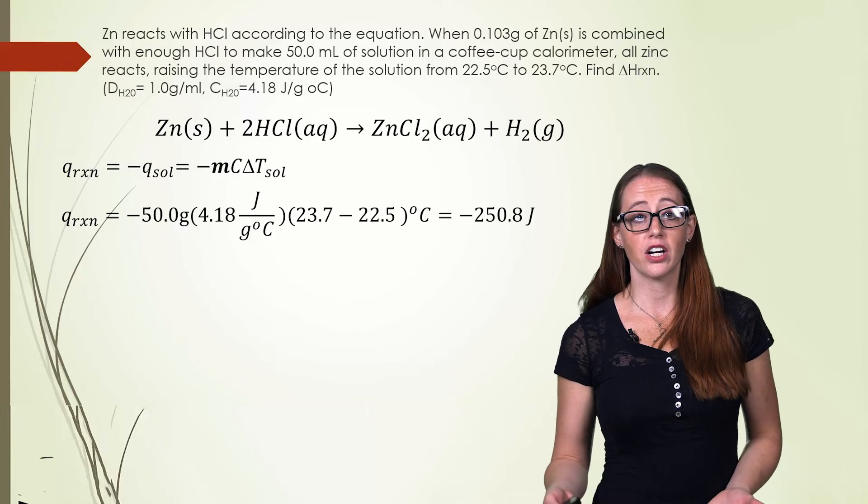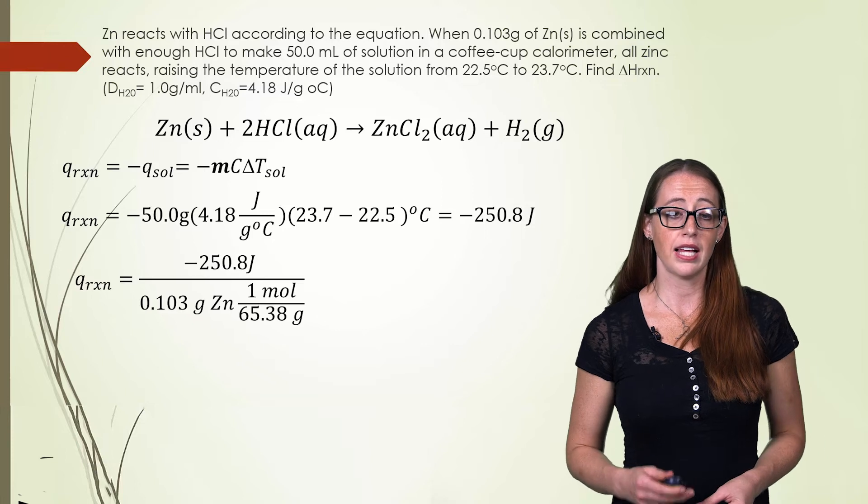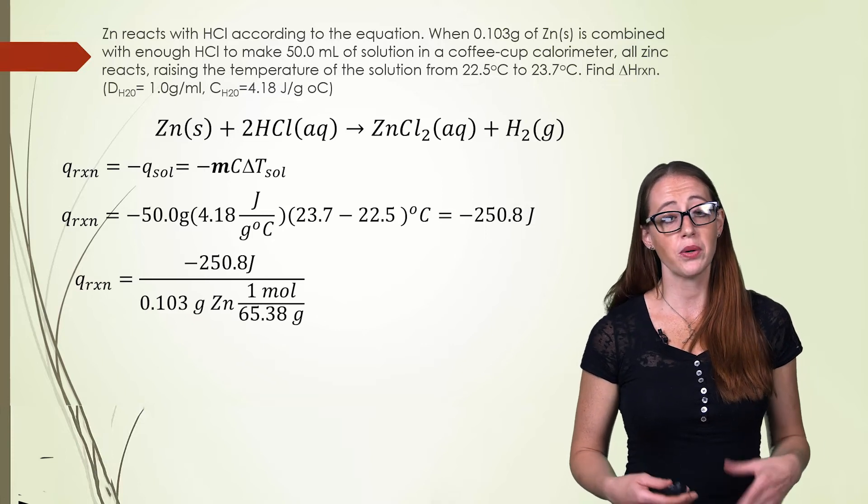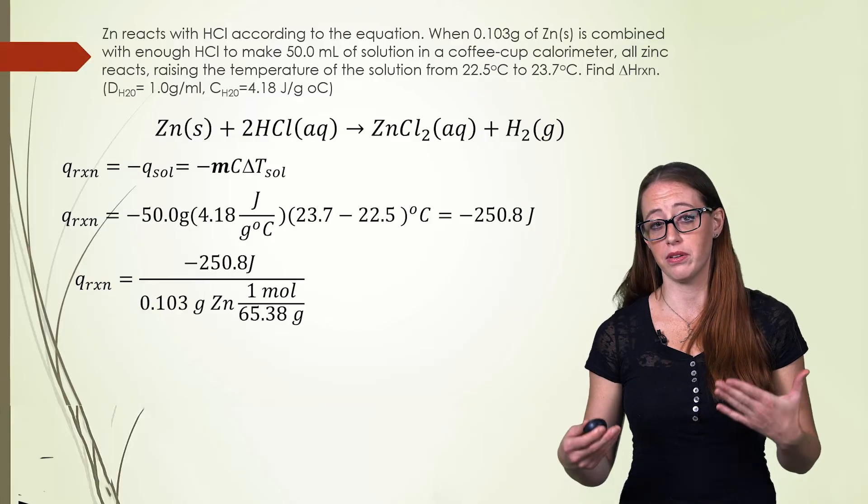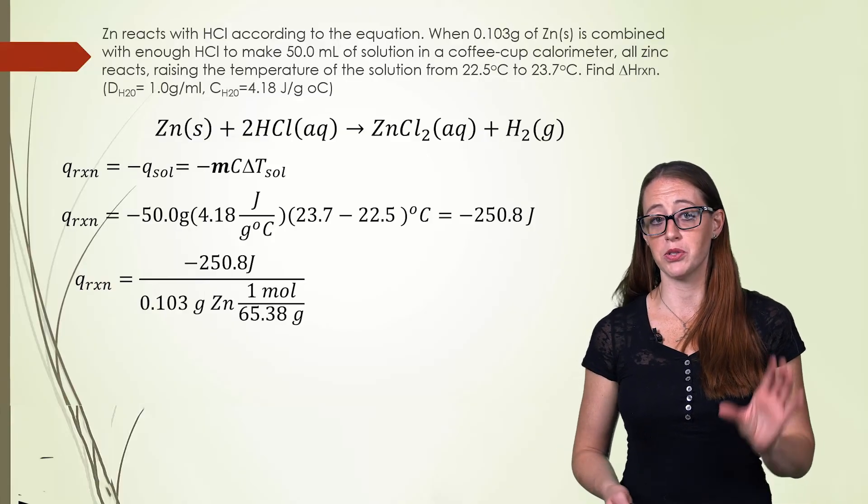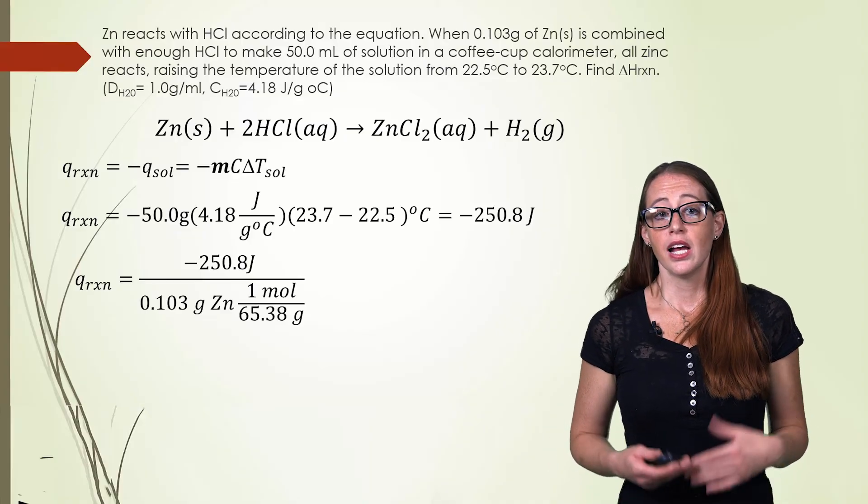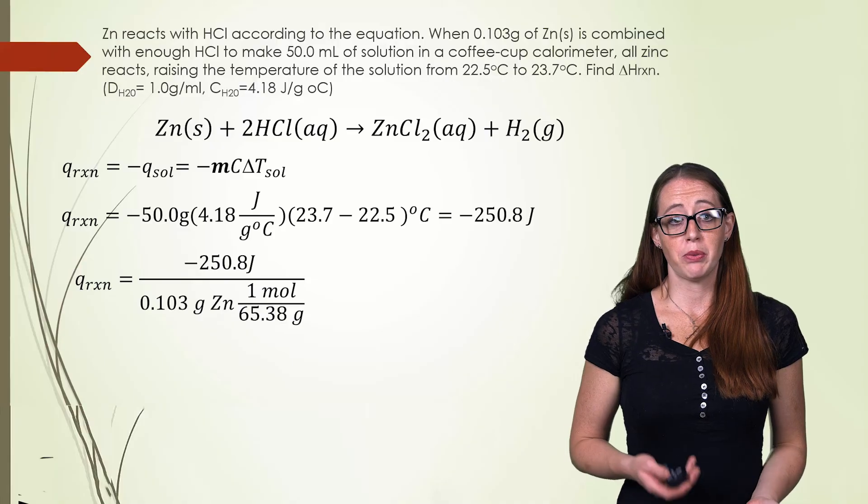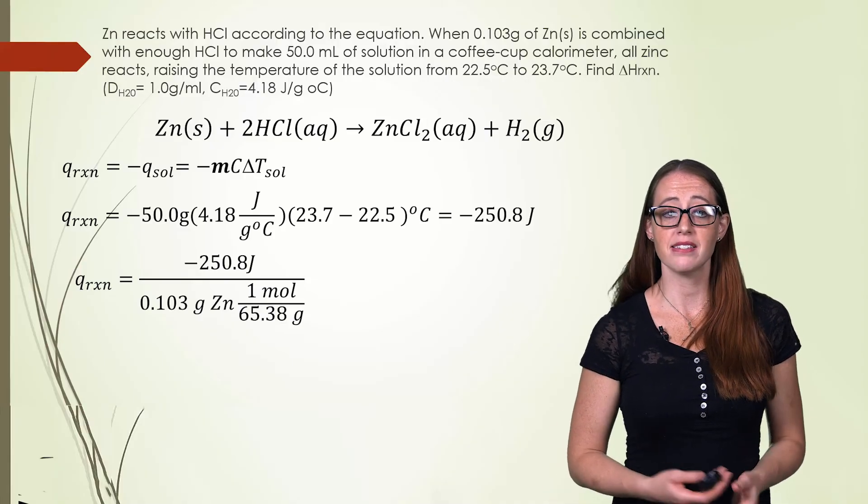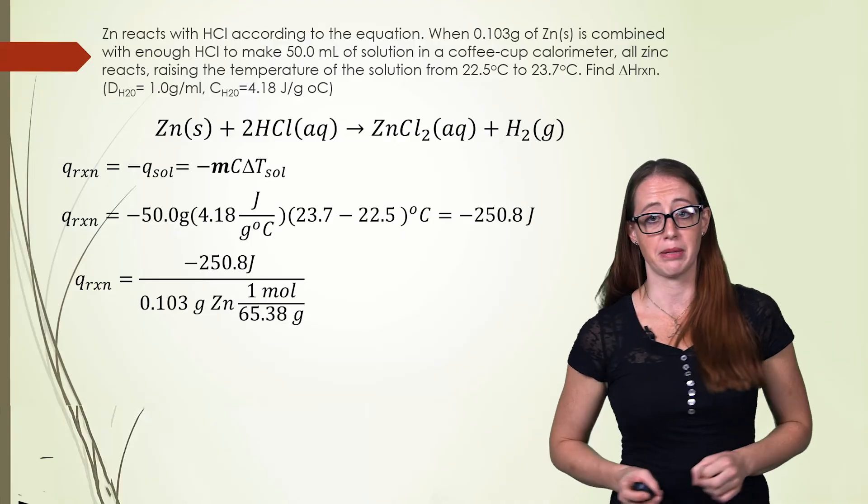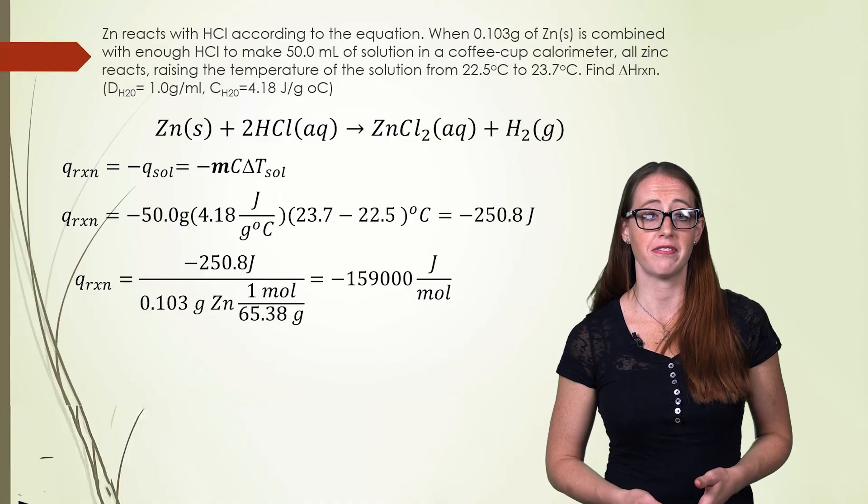From here, we get our Q of reaction. It's negative 250.8. Our last step here is to divide by moles. Because generally, we care about the value of this in terms of moles as opposed to the specific sample that we're using. I did this all in one step by taking the negative 250.8 and dividing it by the grams of zinc divided by the molar mass. But of course, you could do that bottom part in a separate step and then fill in as well.